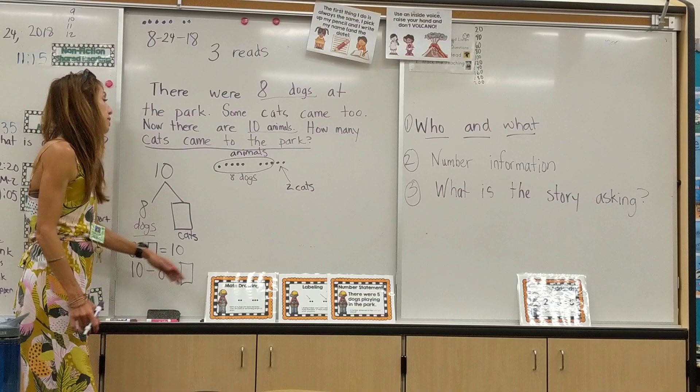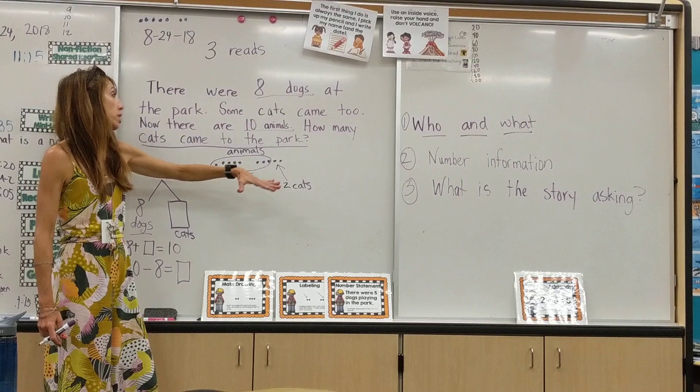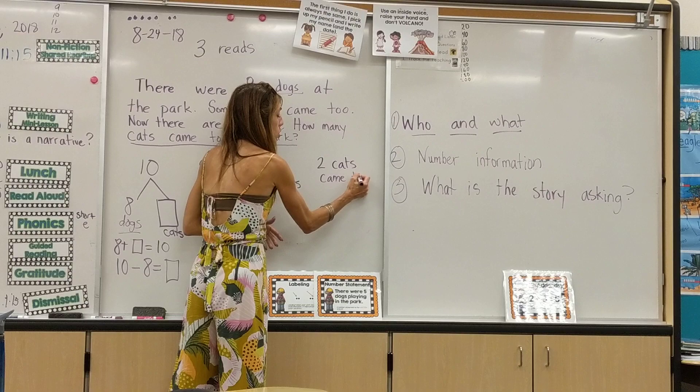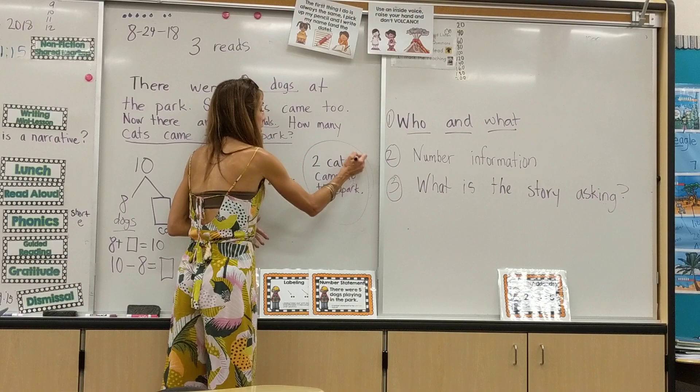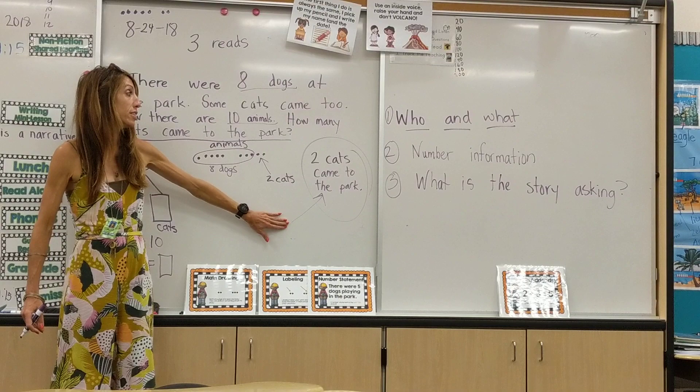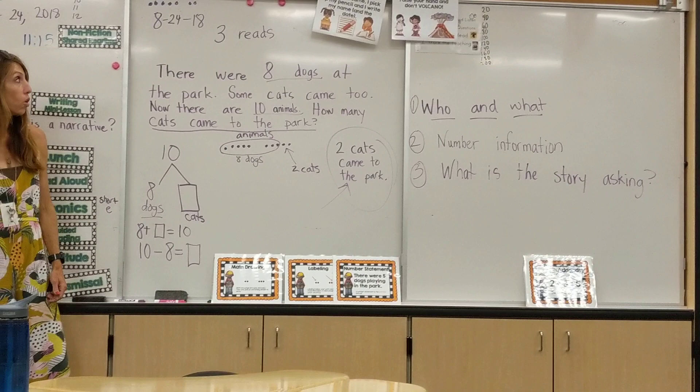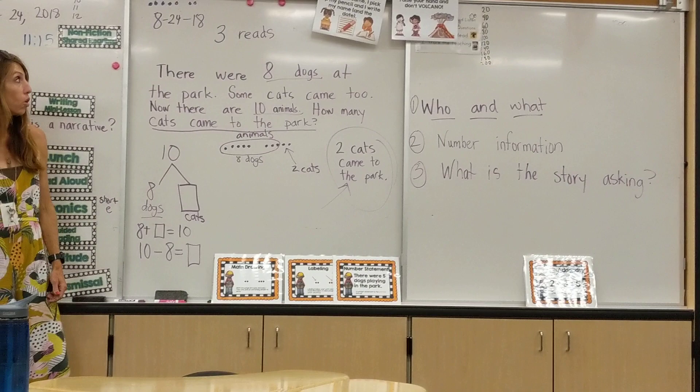That leads us to the final step: the number statement, where they're actually answering the question. How many cats came to the park? They simply say: two cats came to the park. This is really where the understanding of what the story is asking comes through — it also helps with reading comprehension. This final read is by far the most difficult for kids because it challenges them to put their number into a sentence. We try to have the kids read each problem three times, do a number bond, an equation, a drawing, and a math statement. Thank you.